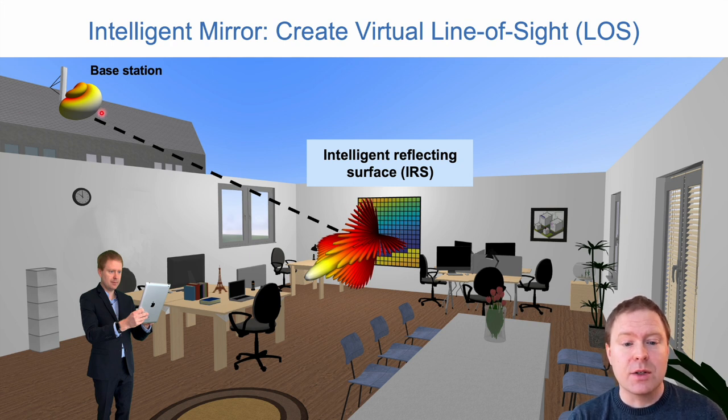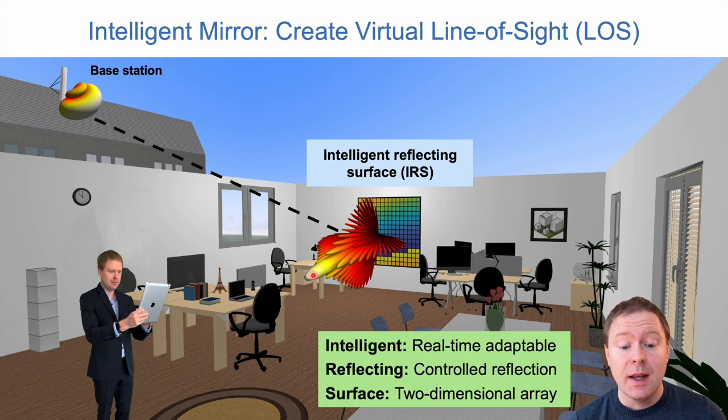The idea here is to create some kind of virtual line of sight path through a mirror. The signal is going from the base station, hits the surface, and the surface is configuring itself in such a way that the signal gets beamformed towards you as a user. We call it intelligent because we can real-time adapt how the surface is behaving.